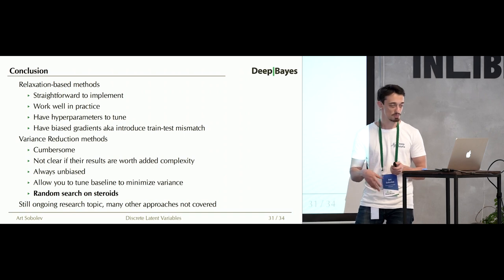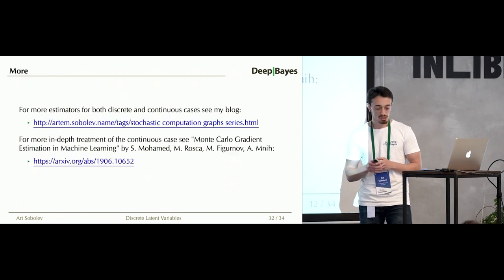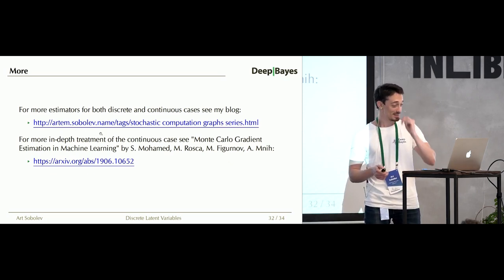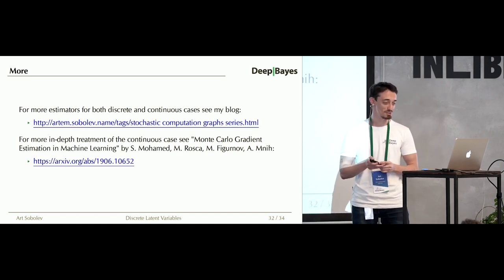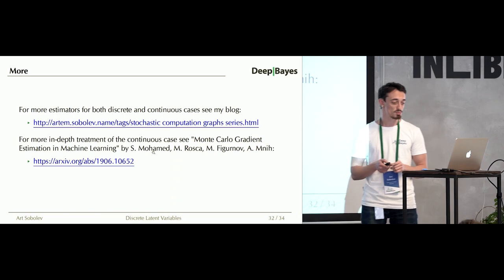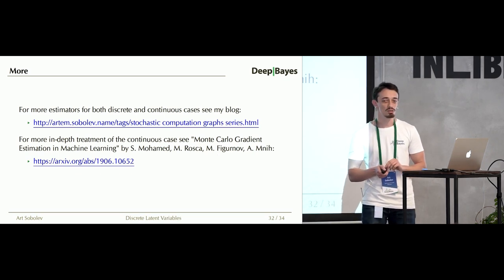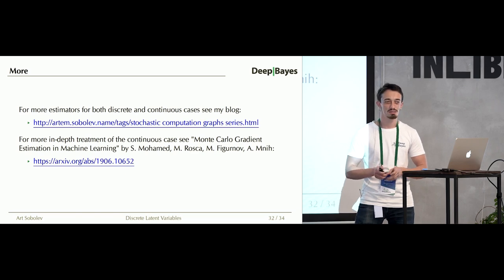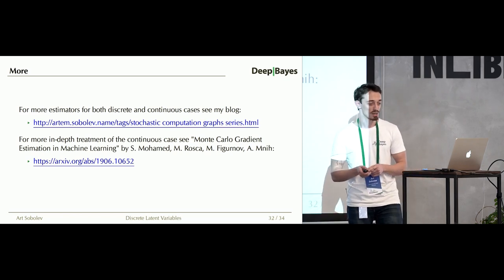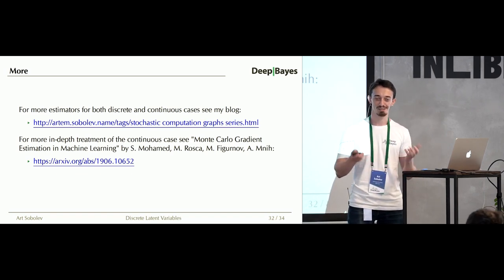This is still an ongoing topic of research — many new methods appear every year at conferences, and many existing methods we left uncovered. If you're interested in learning more, I suggest reading further resources on this topic. I'd also recommend a very cool paper from DeepMind called 'Monte Carlo Gradient Estimation in Machine Learning' — it's more of a review and concerns the continuous case, but it's still a very interesting read. And on that note, thank you for your attention, and bon appétit — lunch is ahead.